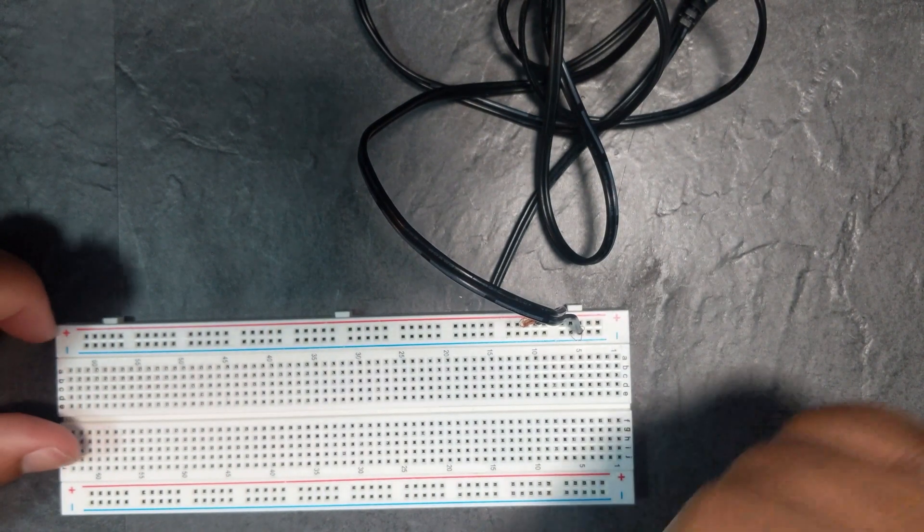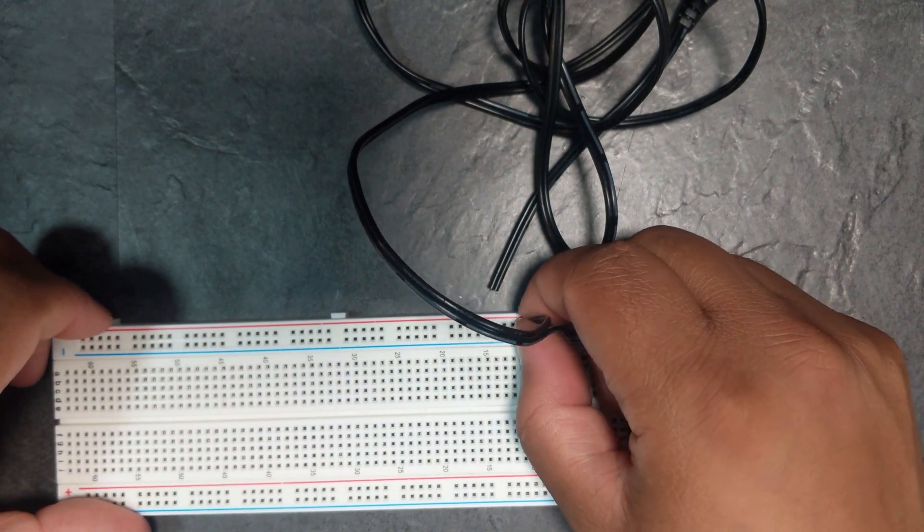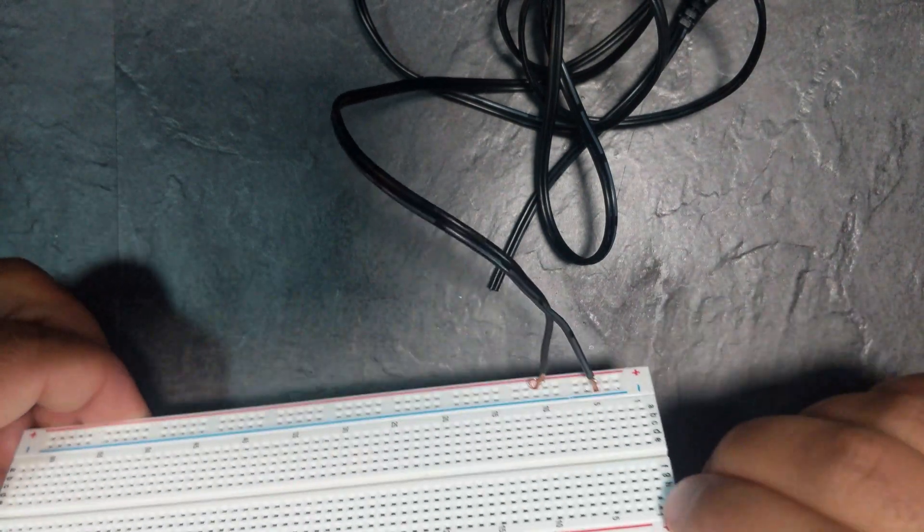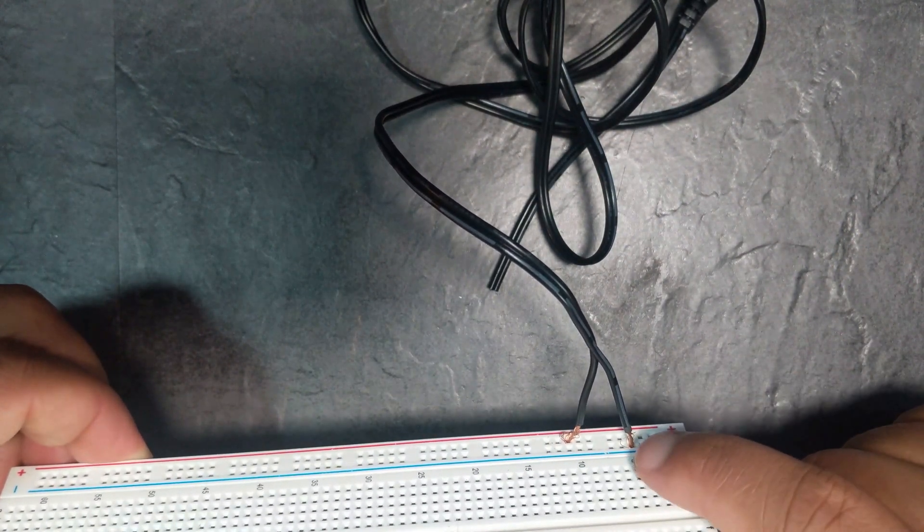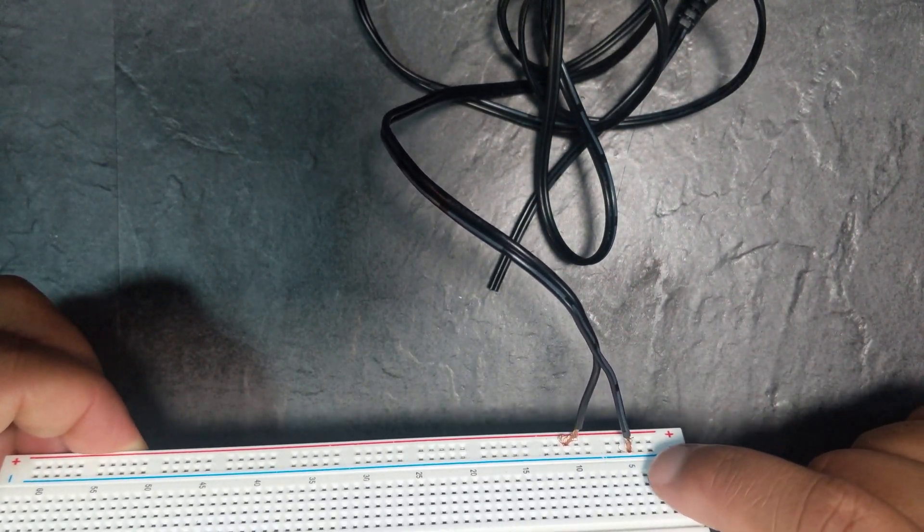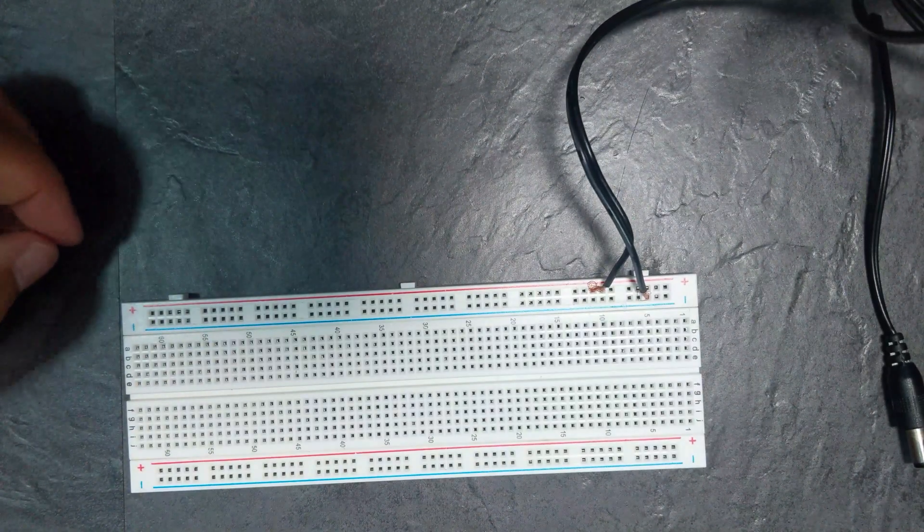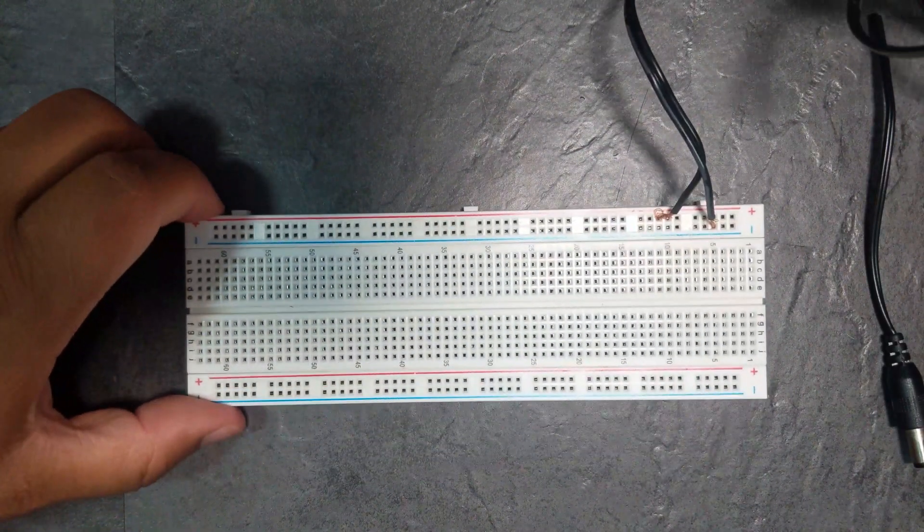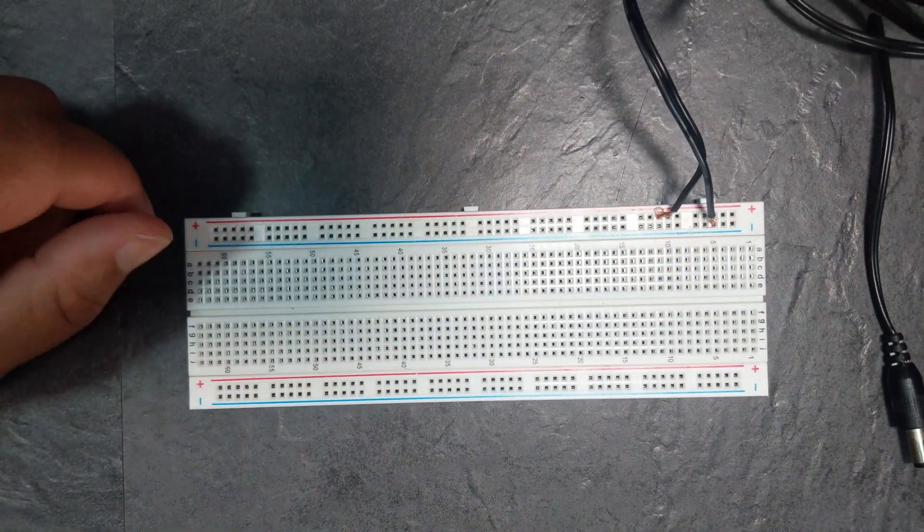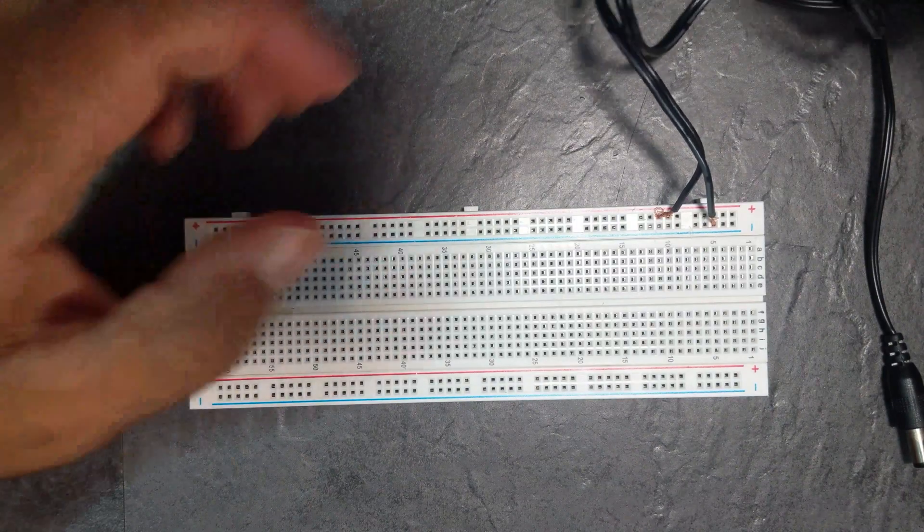So you plug those in. I'd advise plugging them a bit away from each other just so you can see where it's stranded, you don't want them touching. And you just plug your power supply into the wall socket and then you have power.